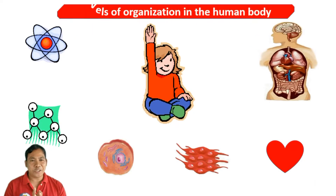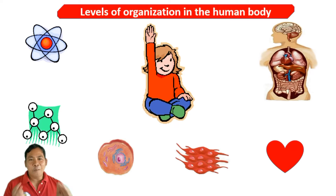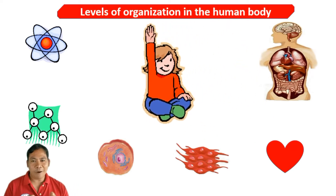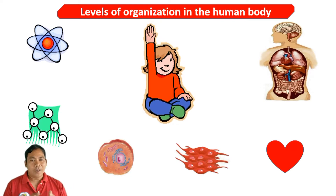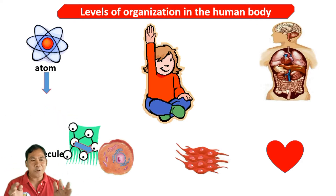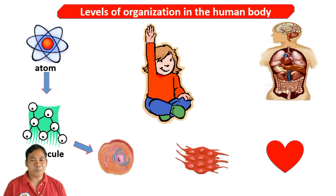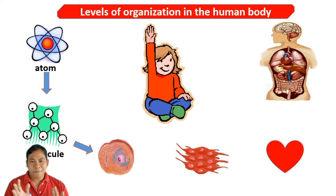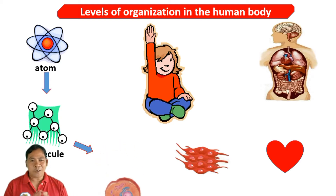The human body is composed of several complex units that work as one. Atoms of elements group together to form molecules, and molecules are grouped together to form a cell. The smallest living unit in the body is called a cell.